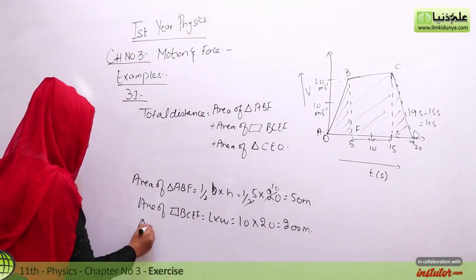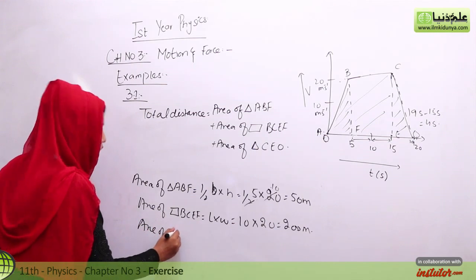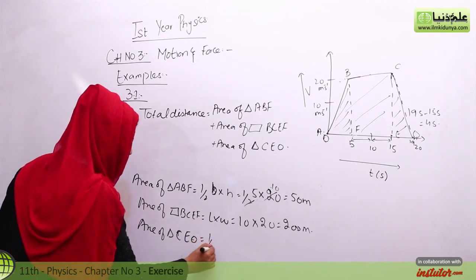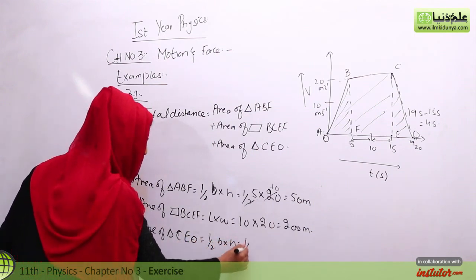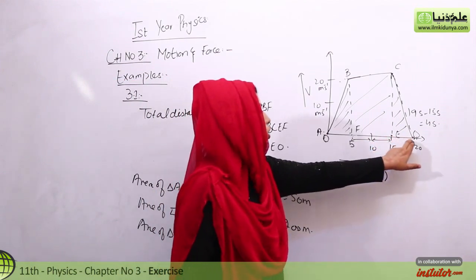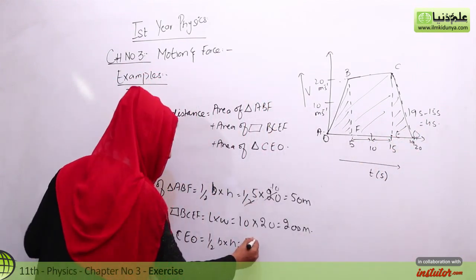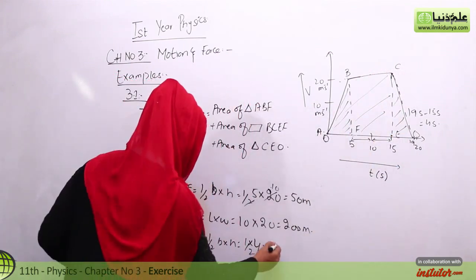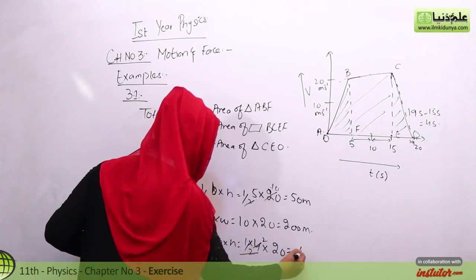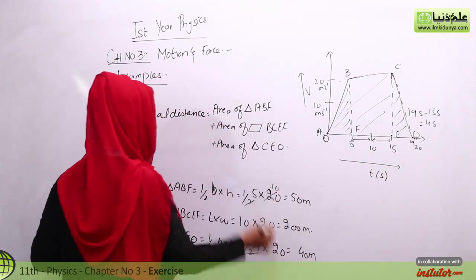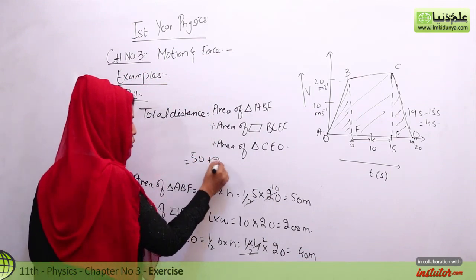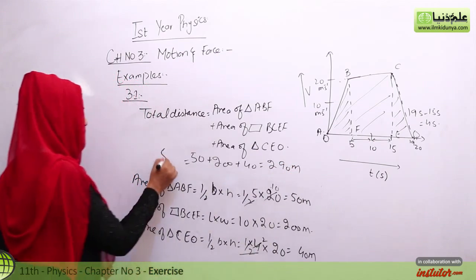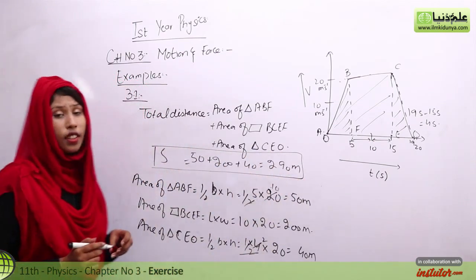We have to find the area of the last triangle CEO. This is 1 by 2, base into height. The base is from 15 to 19 seconds, which is 4 seconds, and the height is 20. This gives us 40 meters. So the total distance is 50 plus 200 plus 40, which equals 290 meters. That is the total distance covered by our car.